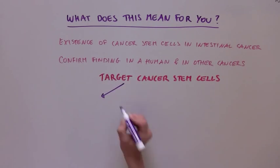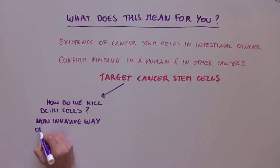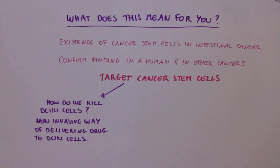The next question will be, how do we kill DCLK1 cells? The authors of this study used genetic manipulation in mice, which is not feasible in humans. So the next step will be to find a non-invasive way of delivering a drug specifically to DCLK1 cells or targeting them some other way.